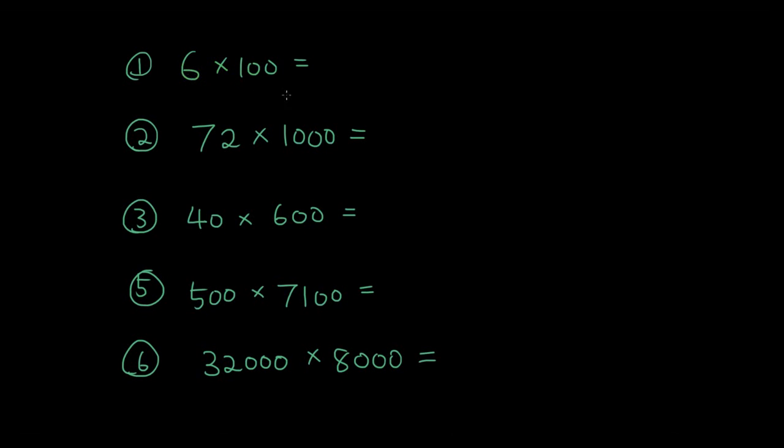So 6 times 100 is 600. 72 times 1,000 is 72,000. Because it's 72 times 1. You write 72. And how many zeros are there? 3 zeros.